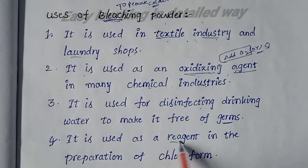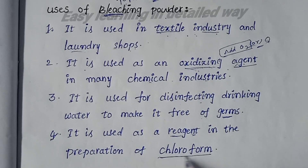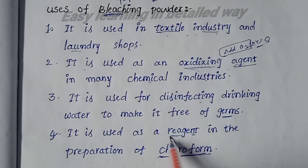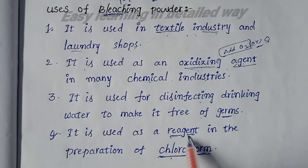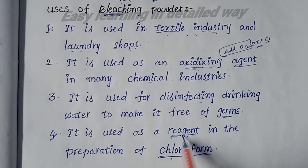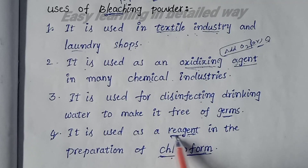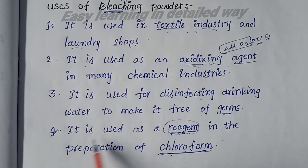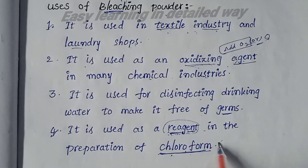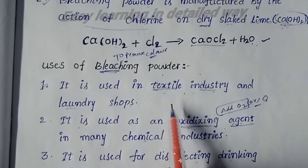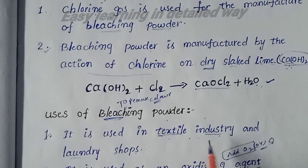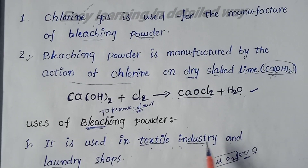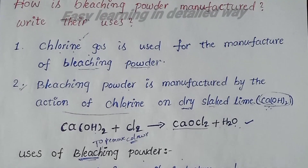The fourth use: bleaching powder is used as a reagent in the preparation of chloroform. It is not a reactant but a reagent — used to initiate or enhance the reaction. These are the uses of bleaching powder, covering its preparation and uses. Thank you so much for watching this video.